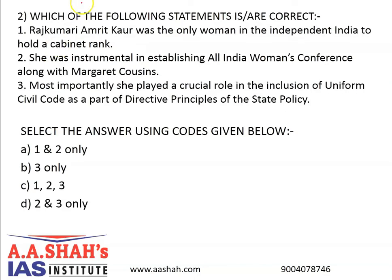Question number 2. Which of the following statements is or are correct? Number 1: Rajkumari Amrit Kaur was the only woman in independent India to hold a cabinet rank. Number 2: She was instrumental in establishing the All India Women's Conference along with Margaret Cousins. Number 3: Most importantly she played a crucial role in the inclusion of uniform civil code as part of the directive principles of state policy. Select the answer using the codes given below. A: 1 and 2 only. B: 3 only. C: 1, 2, 3. D: 2 and 3 only.